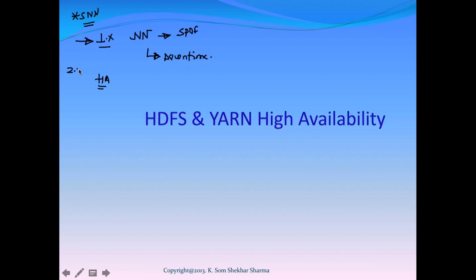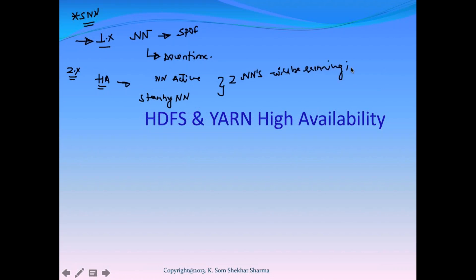The HA configuration is only available after Hadoop 2.x versions. In HA configuration, you will have one active name node and one standby name node — two name nodes running in an active and passive fashion. If the active goes down, the passive will take over and become active. At any given point of time, only one name node will be active.